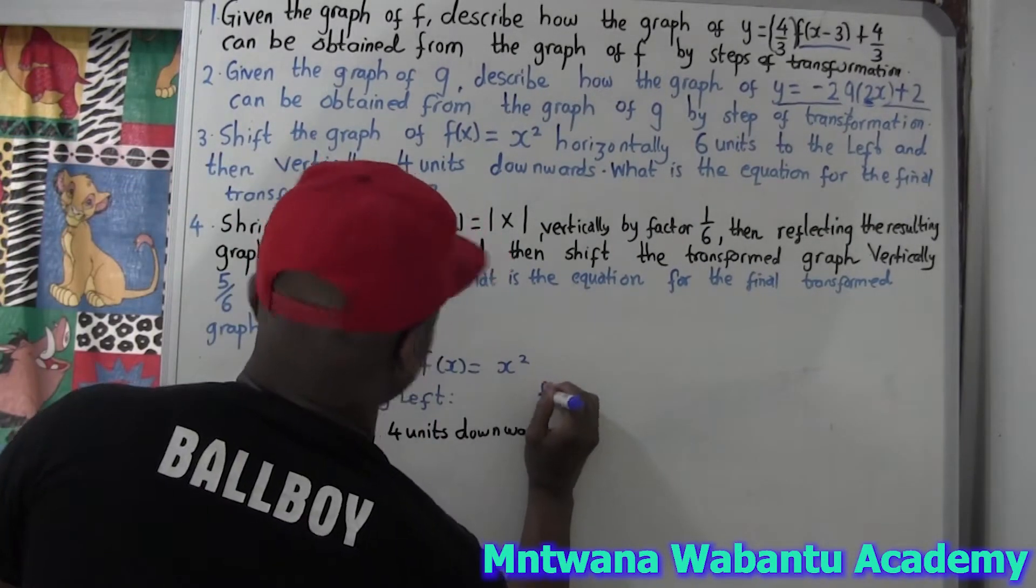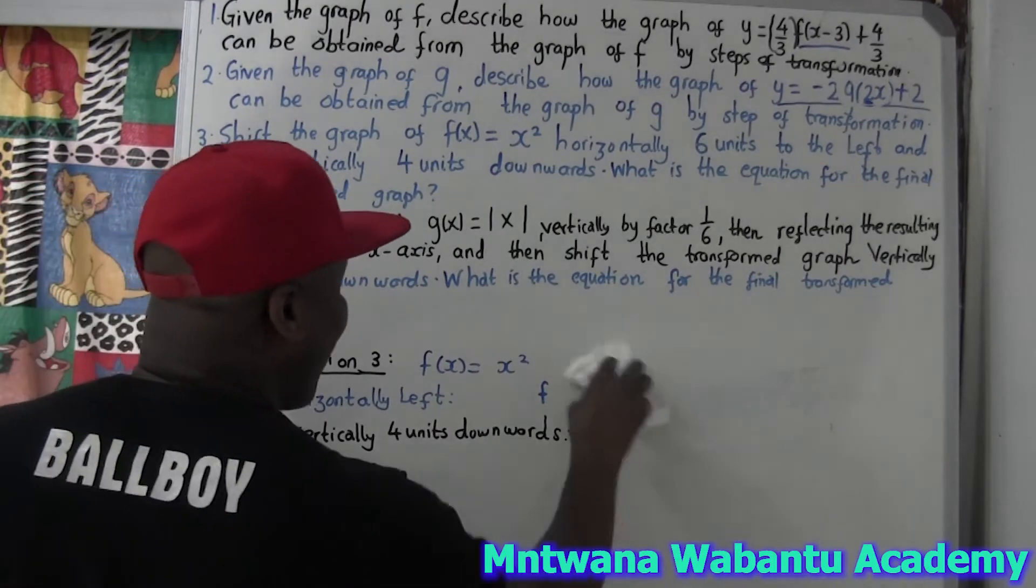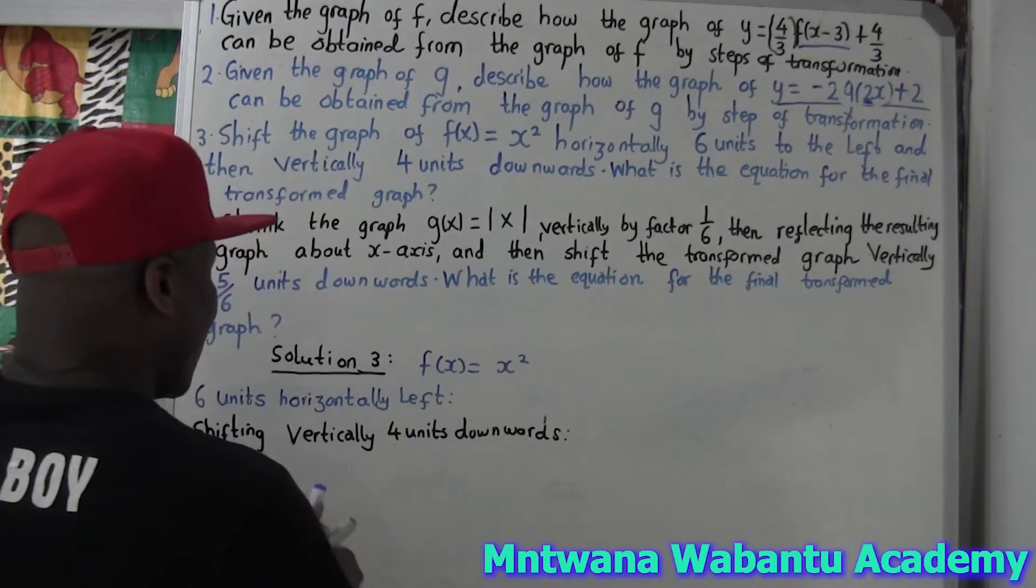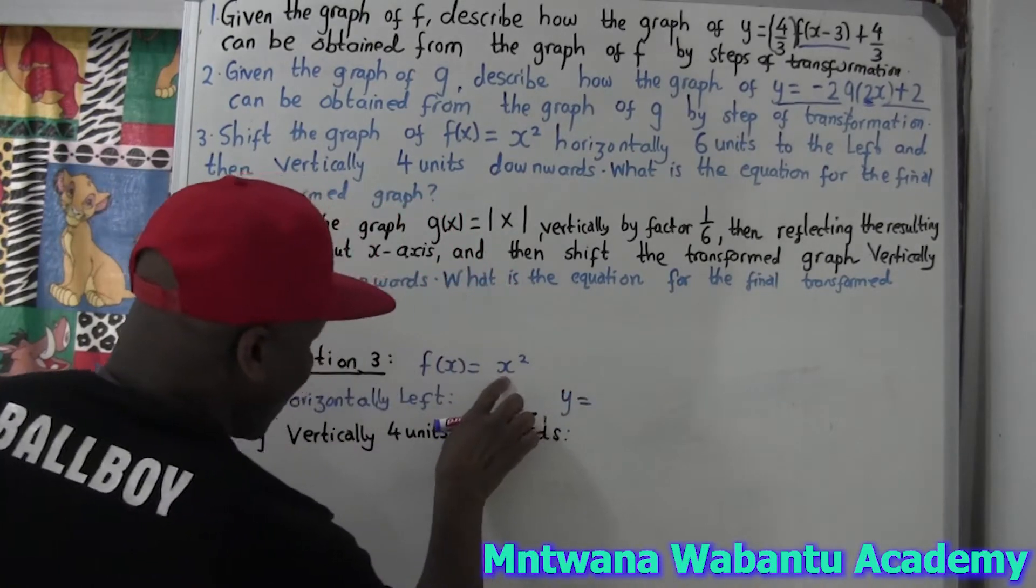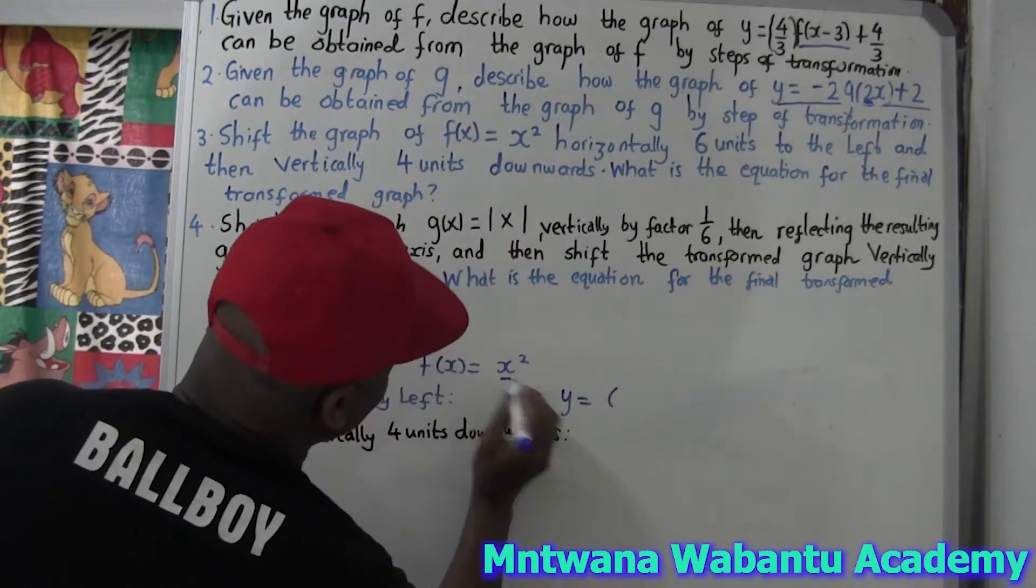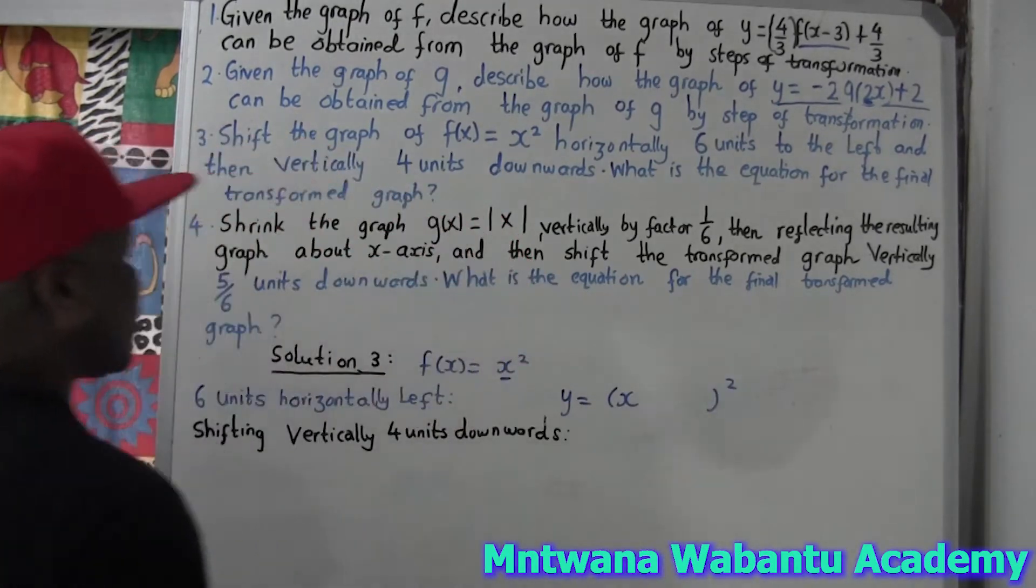So six unit to the left. Okay, so this is gonna be f(x) or you can say y, because now we move from f(x) we want to produce something new. So I'm gonna say this is gonna be y equal to the left.